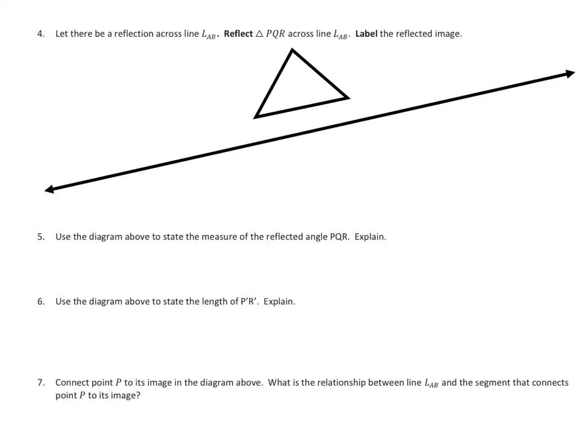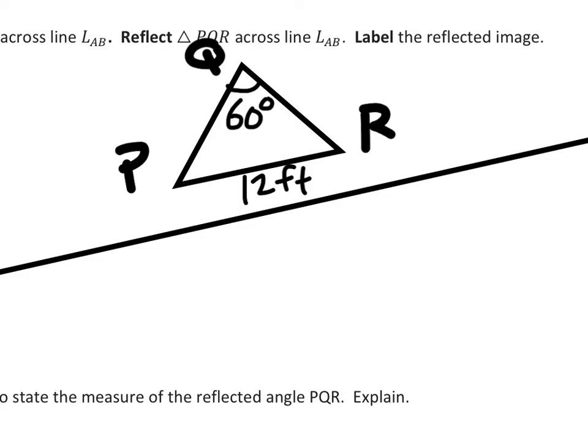Let there be a reflection across line AB. We're going to reflect triangle PQR across line AB. I'm going to start with point P. Looking at this, I'm going to make a 90 degree angle with the line of reflection, and go in the other direction the same distance. That's about right there, labeled P prime.